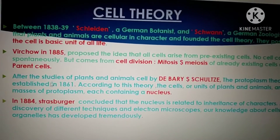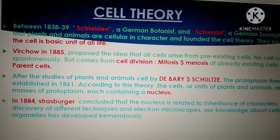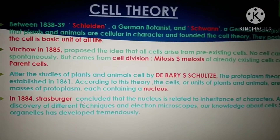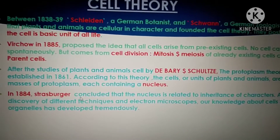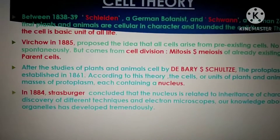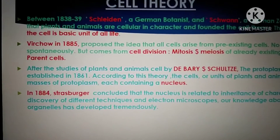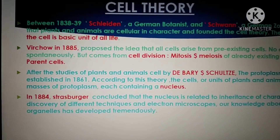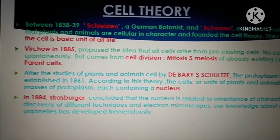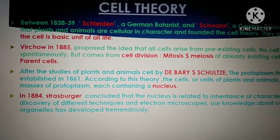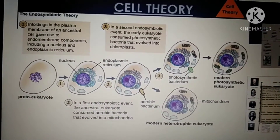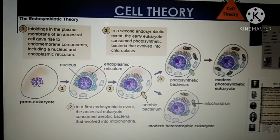In 1884, Straszburger concluded that the nucleus is related to the inheritance of characters. After the discovery of different techniques and the electron microscope, our knowledge about cell structure and organelles has been developed tremendously.